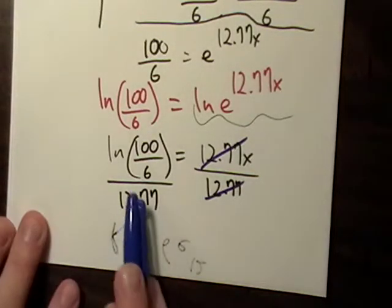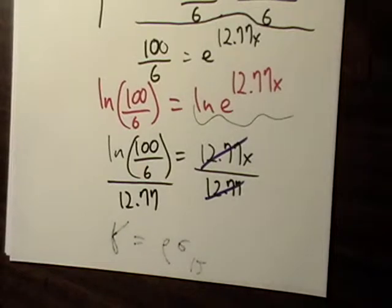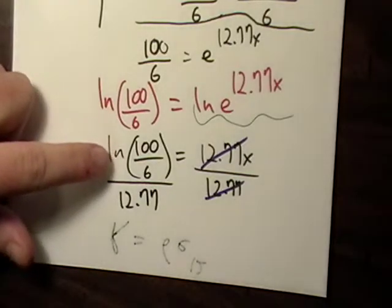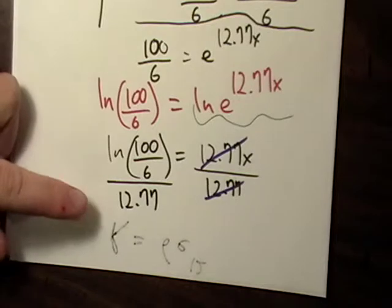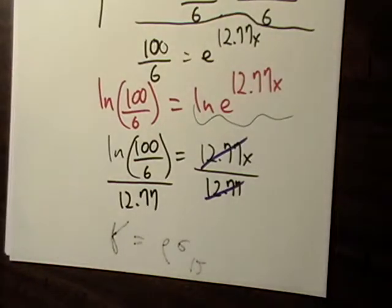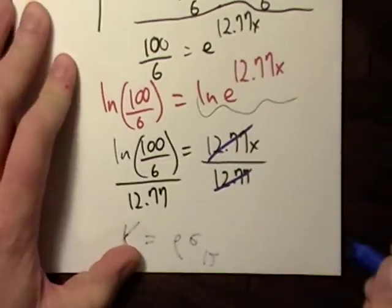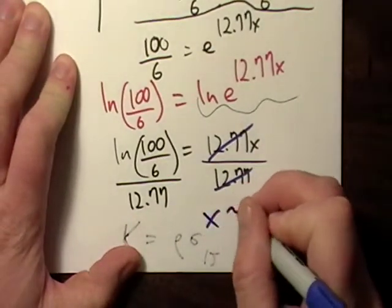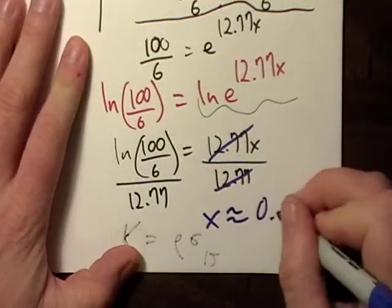And for this part right here, you're going to have to get your calculator out. And I'm going to go natural log of one hundred divided by six. I'm taking the log of one hundred over six, not the natural log of one hundred divided by the log of six. And divide that by 12.77. And that's going to give me, according to my calculator, a BAC of approximately .22.